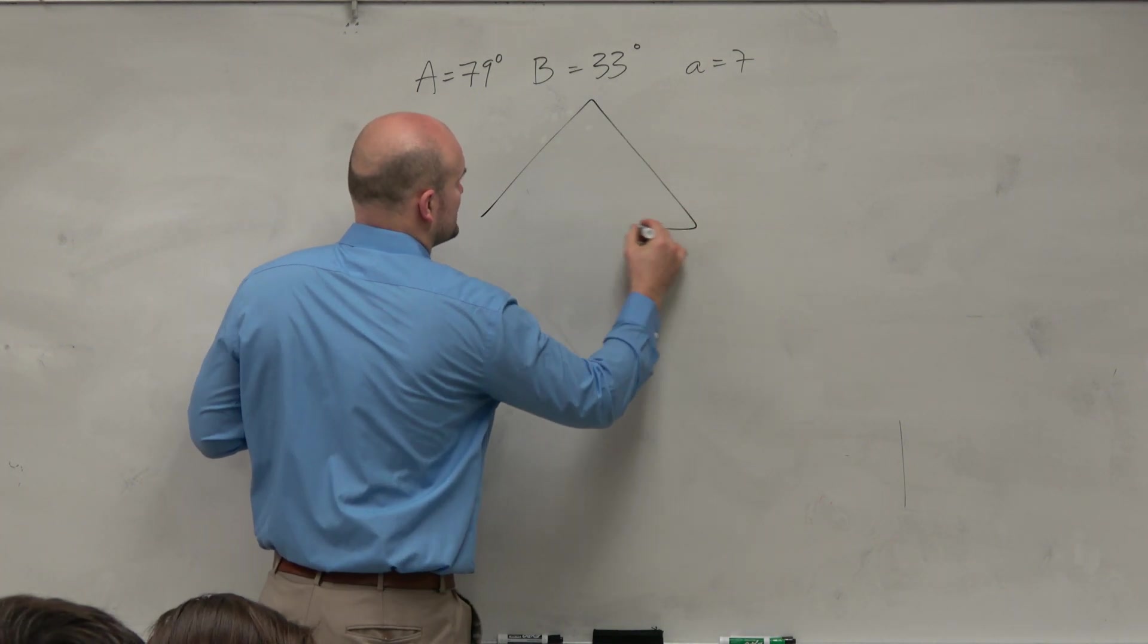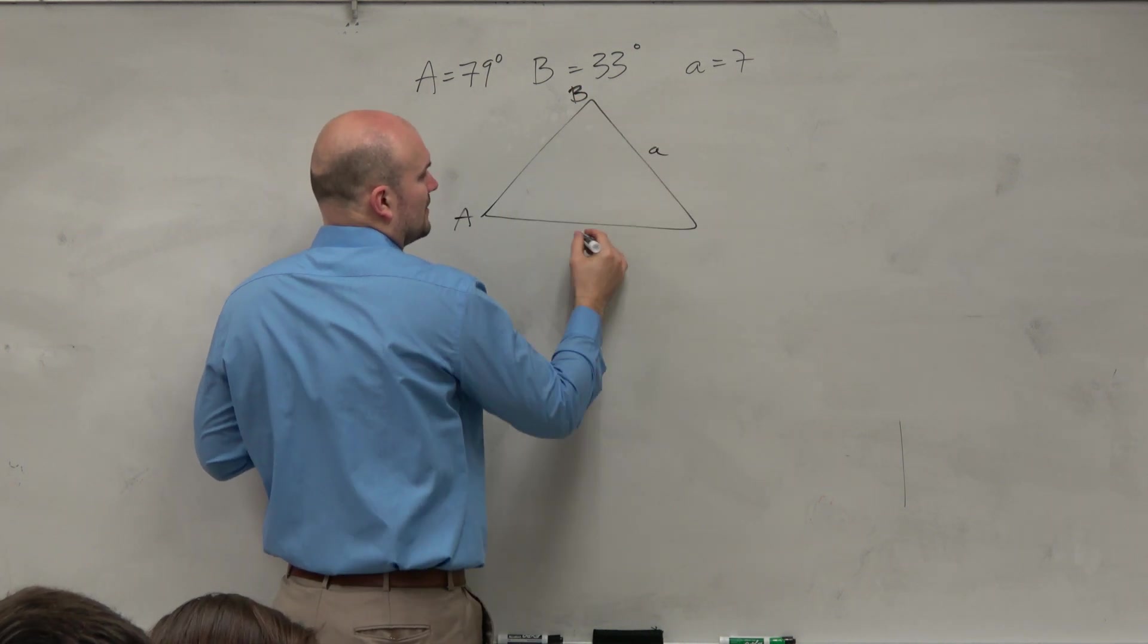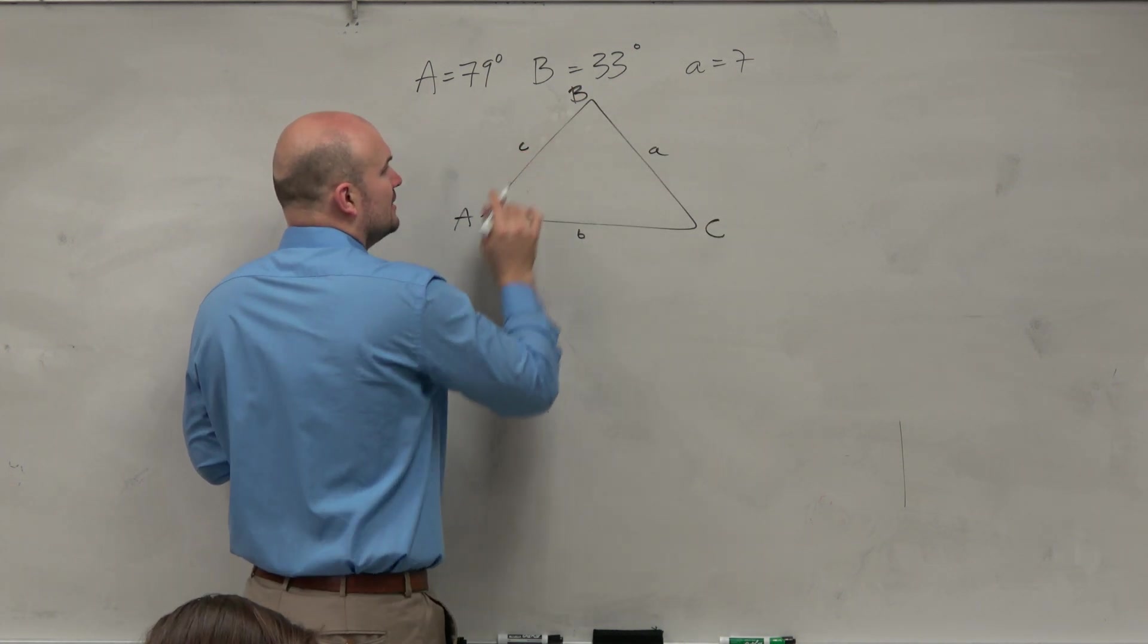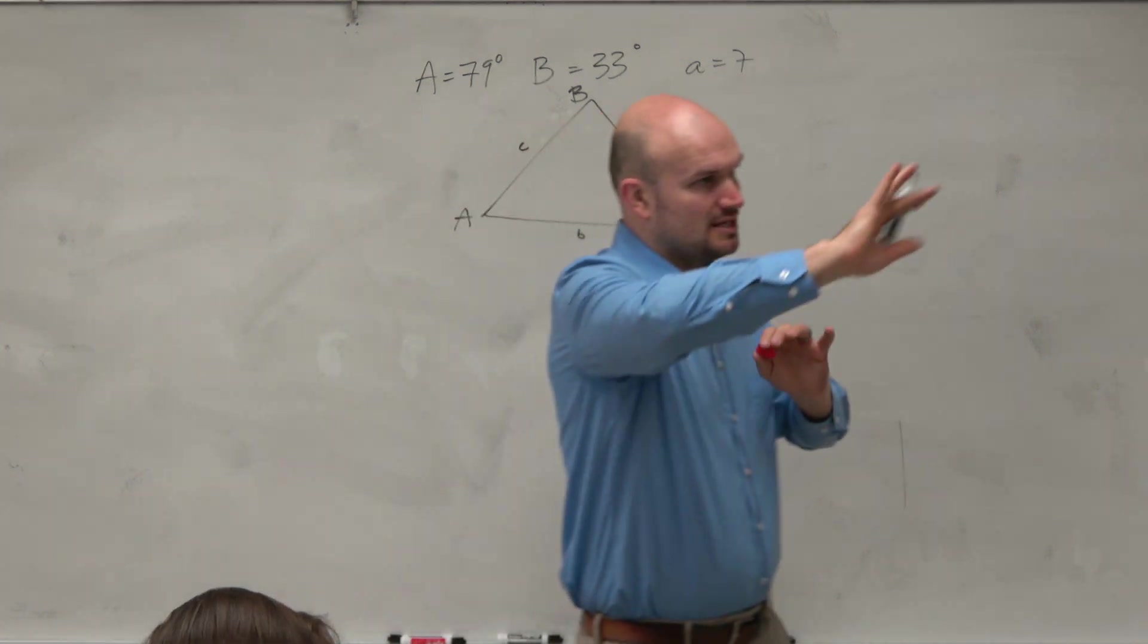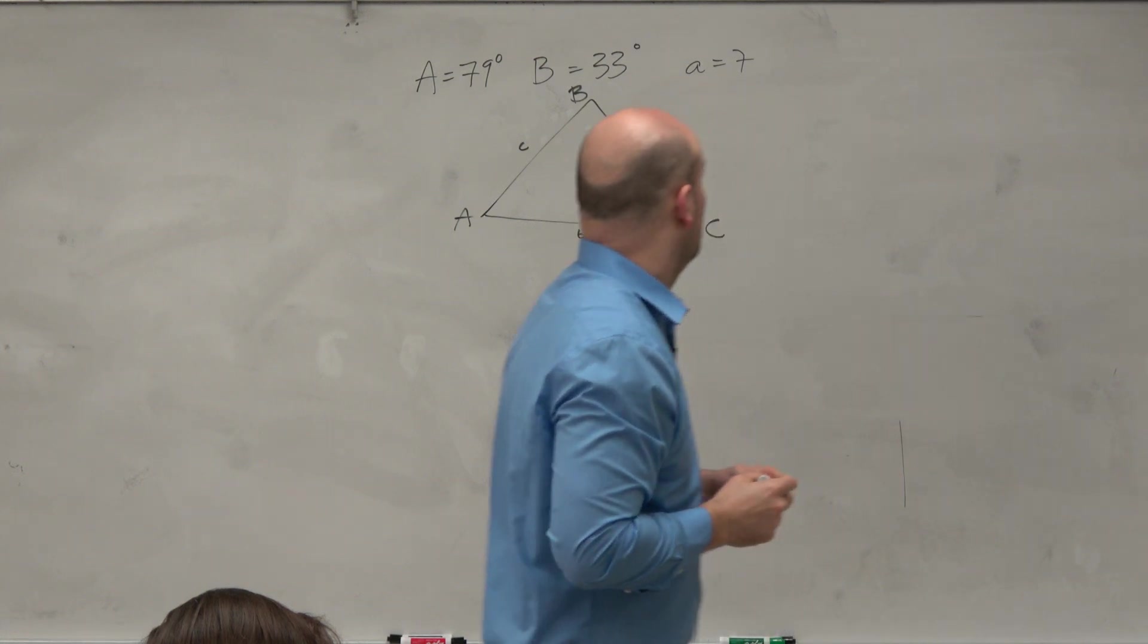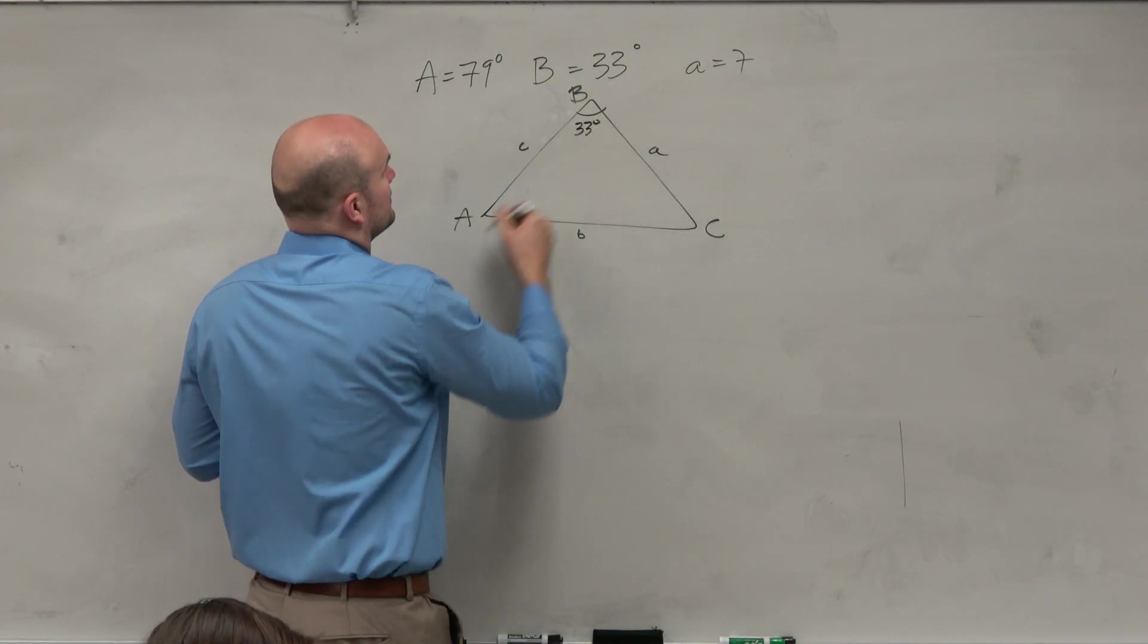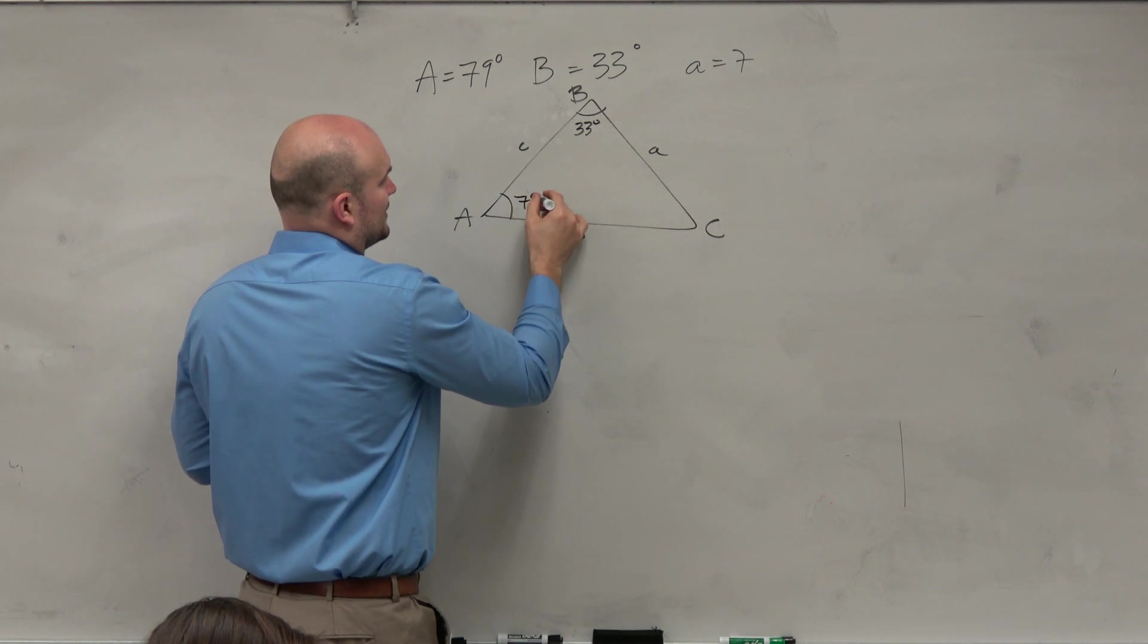So I'm just going to label it like this. Doesn't matter where A, B, and C is. I'm just going to label it the way that I always have it. And just remember that the angles and their side lengths are always opposing, right? Like the small a is opposite of the angle. Now, I'm just going to label my information. So I have B is 33 degrees, A is 79 degrees.